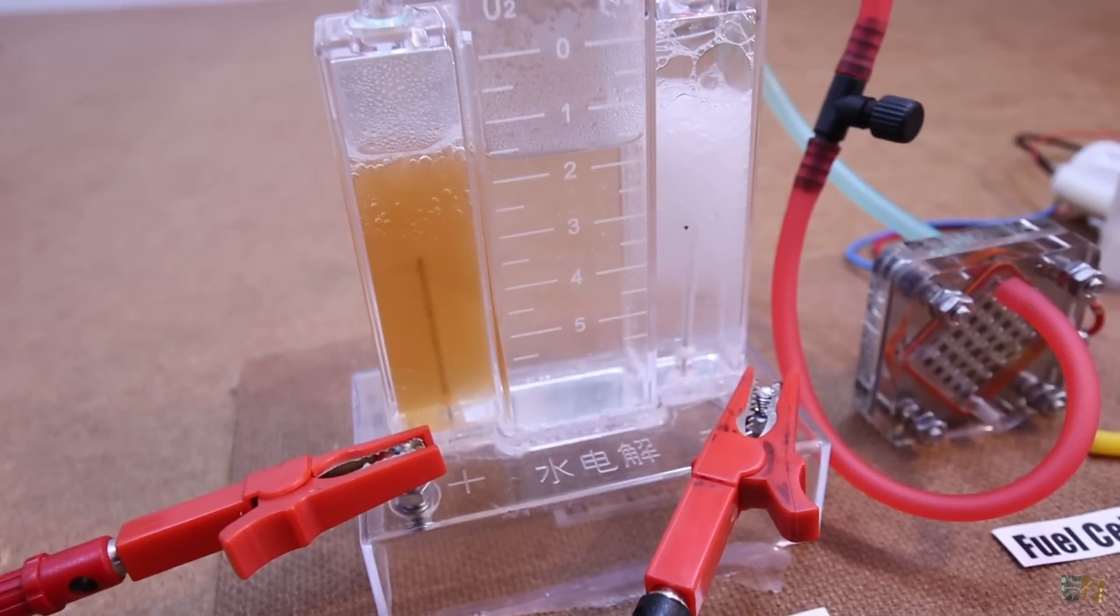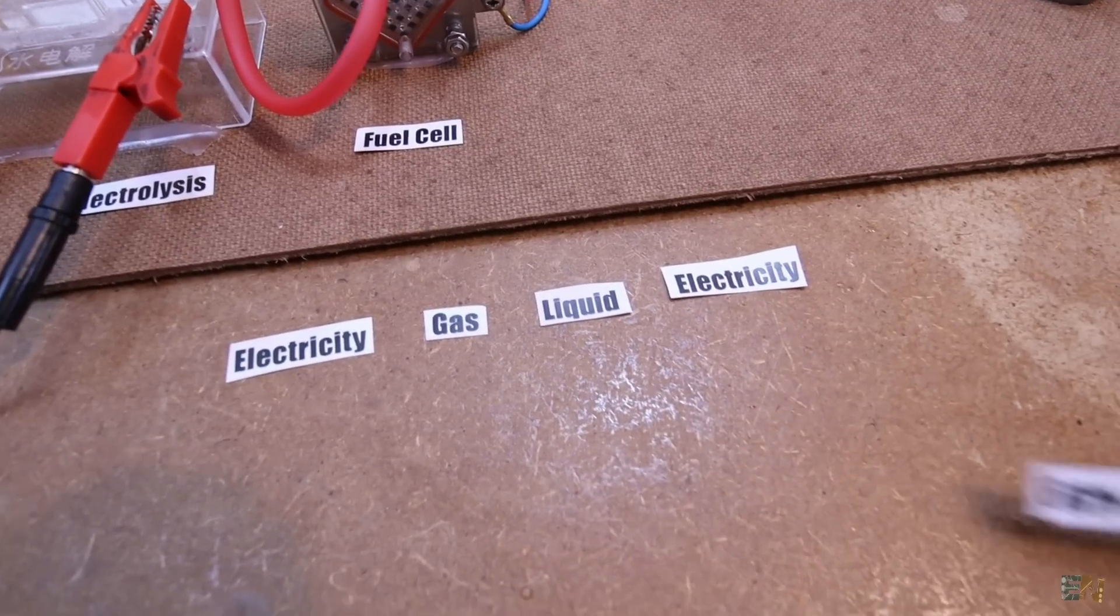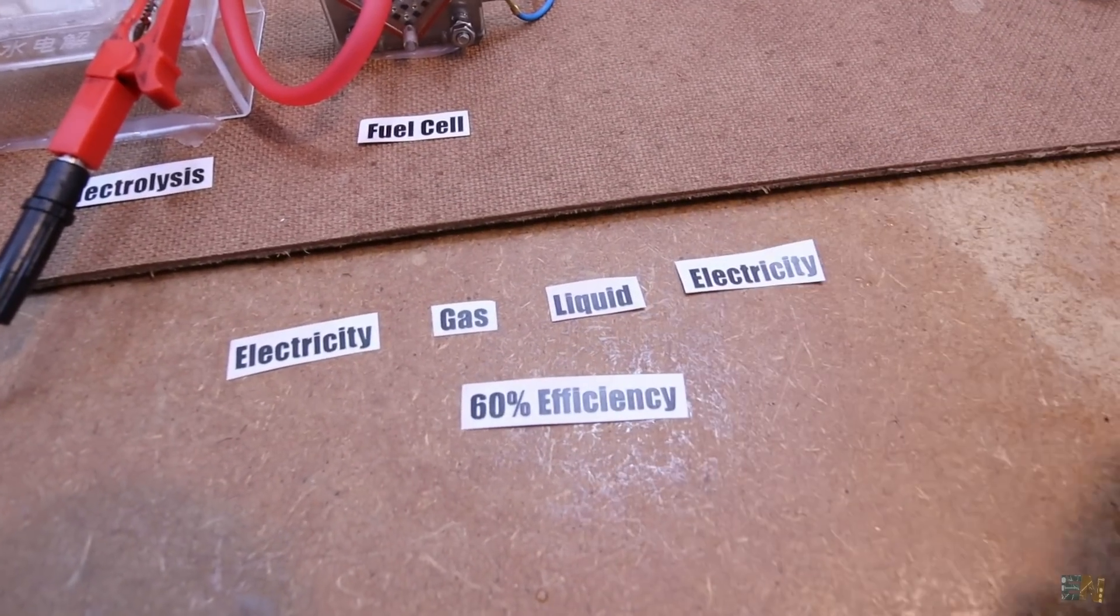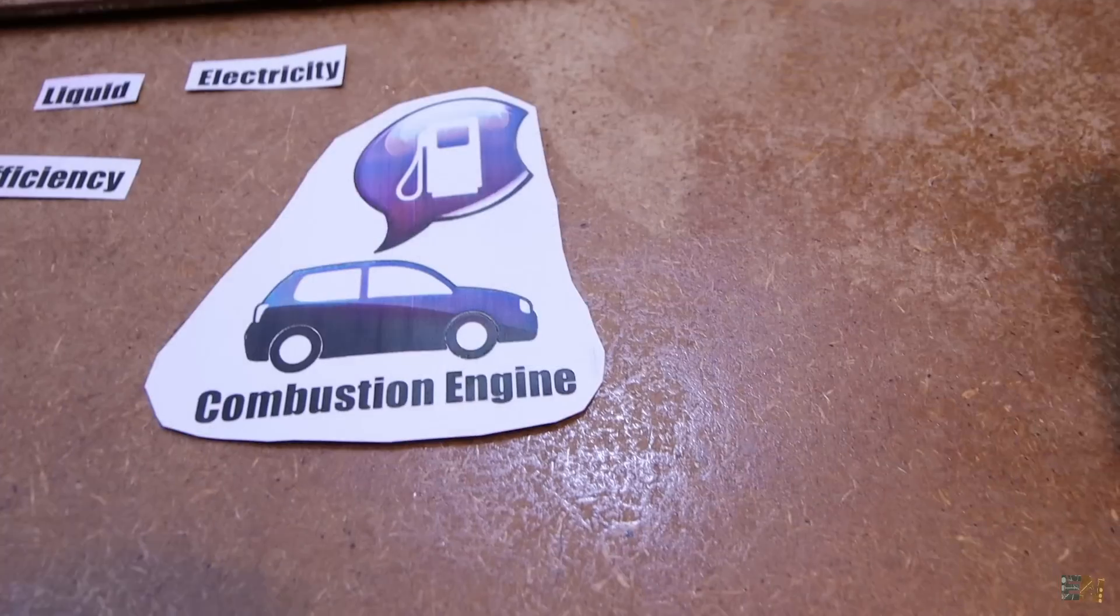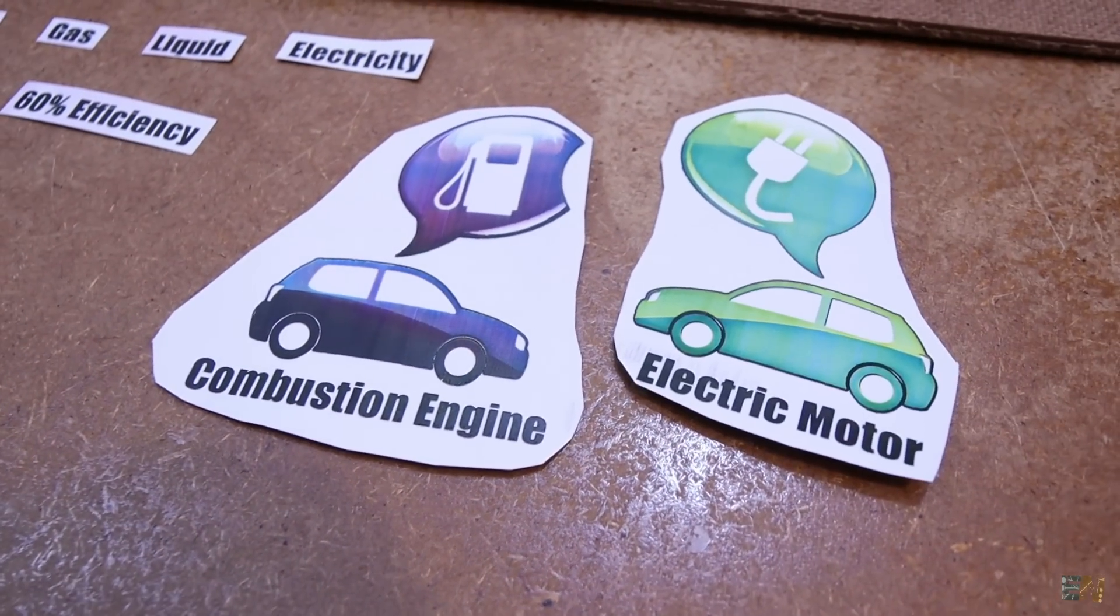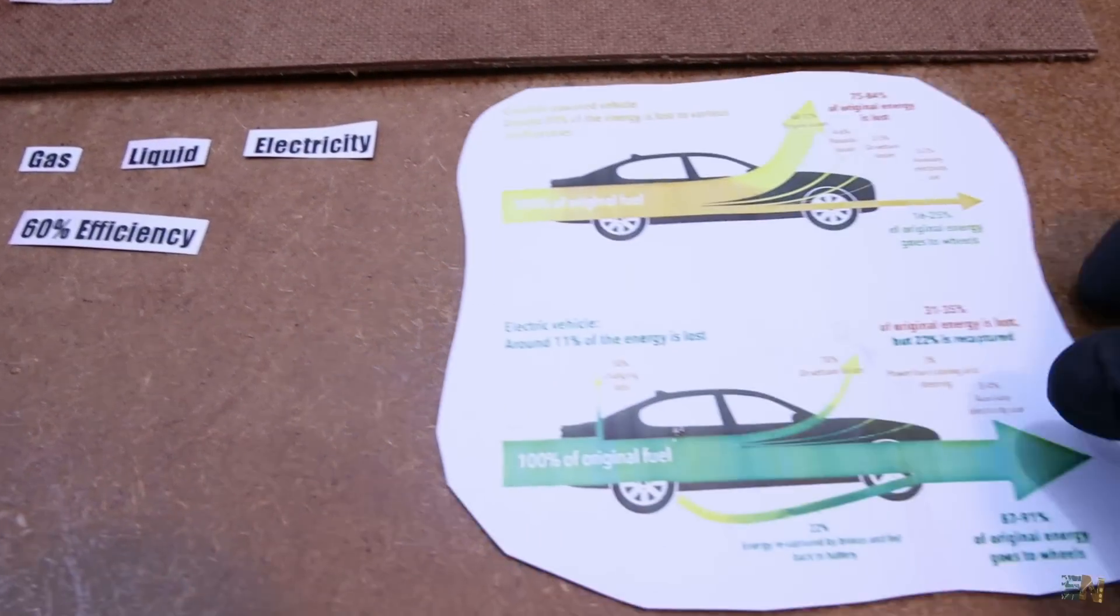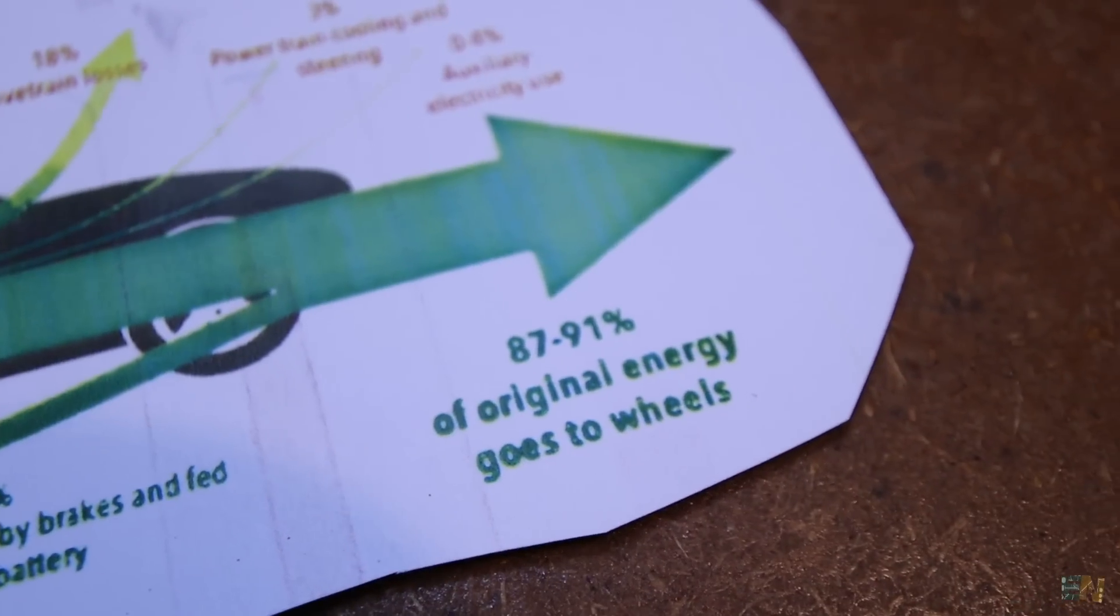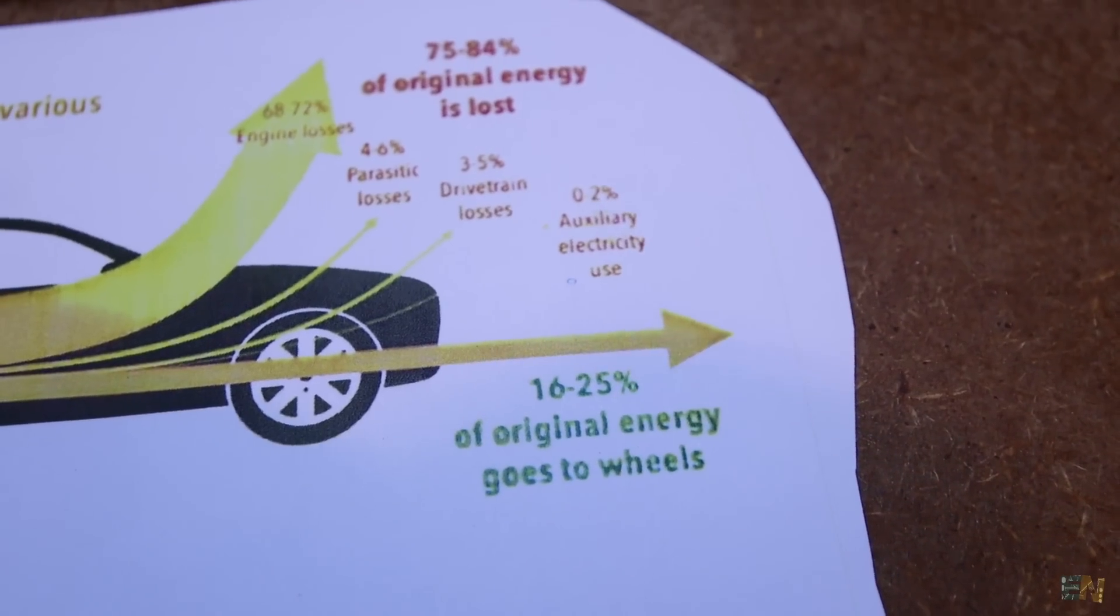And usually the efficiency of this process from electrical power to gas, then to liquid hydrogen and then back to electrical power is around 60%, which is not that bad. It's still better than a normal gasoline combustion engine. And the electric motors could get up to 80 or 90% efficiency compared with only 20 or 30% efficiency for the gasoline combustion motors.